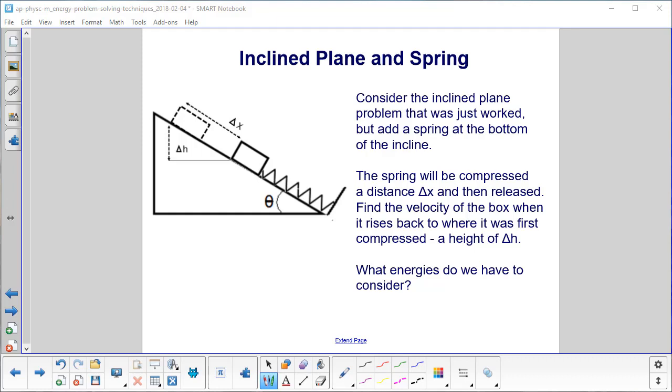Let's add another energy to the problem by putting a spring at the bottom of the incline. The spring will be compressed a distance delta x, and you can see that's happening up here. Here's our initial position of the block. It compresses the spring, and here's where it is. Then what will happen once it's fully compressed? It will spring back and shoot the box that way.